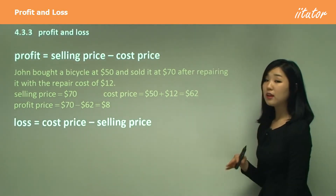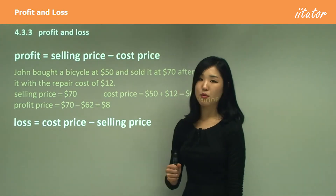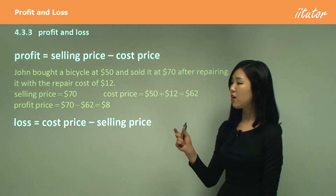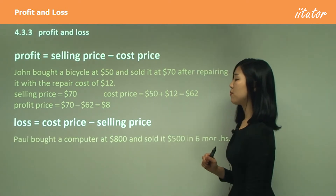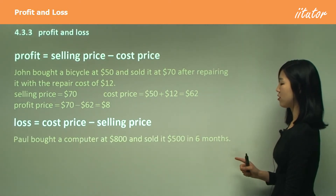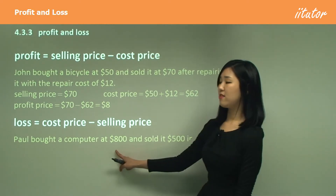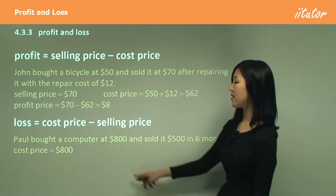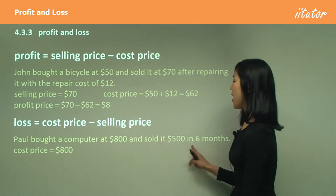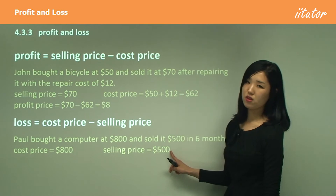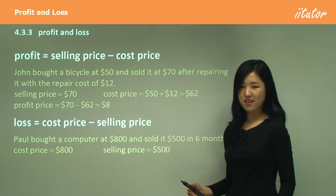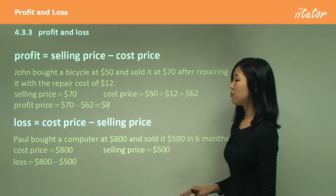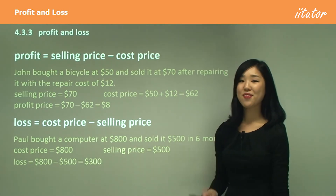Now, loss. Loss is the exact opposite of profit — it's the cost price minus selling price. The selling price is lower than what you bought it for, and that's the loss you make. For example: Paul bought a computer at $800 and sold it for $500 six months later. The cost price is $800 and the selling price is $500 — it's lower probably because it's secondhand. Therefore, the loss is simply the difference: $300.